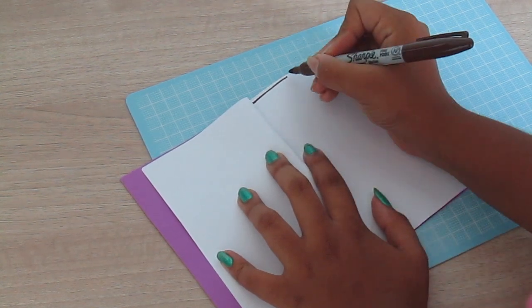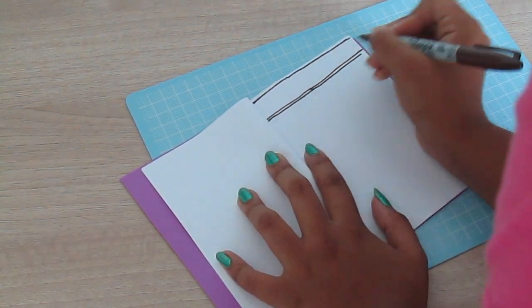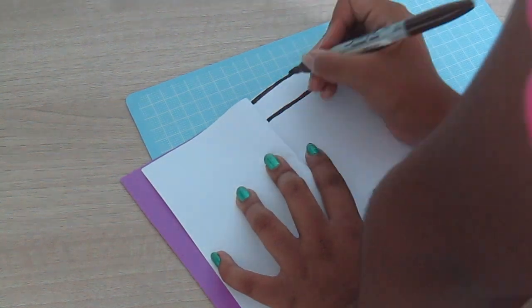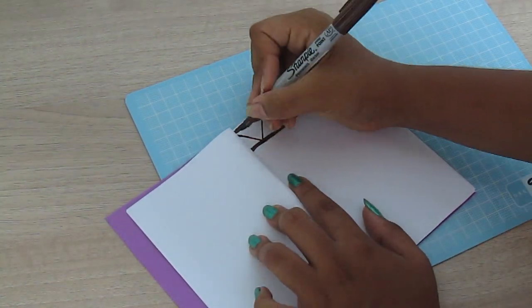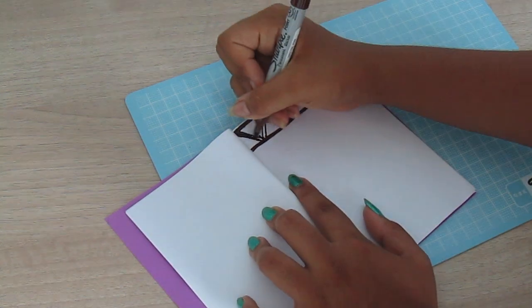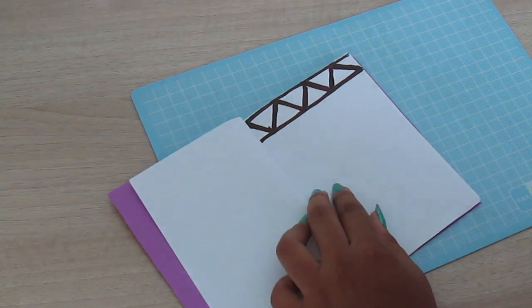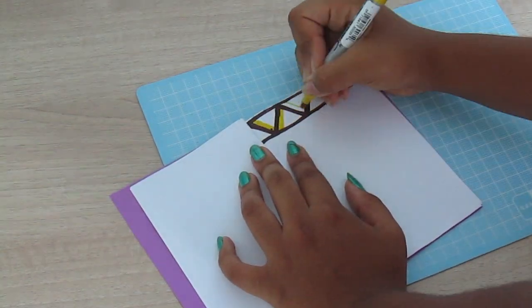Once you're done decorating and making your journal, you can begin doing whatever you want in it. You can take notes in it, use it as a proper notebook, or use it for doodling like I am. When I'm bored, I like to doodle random things in different colors and just get creative.